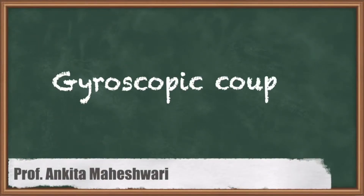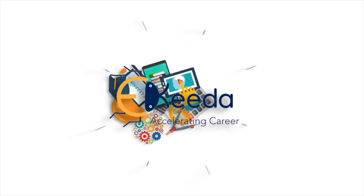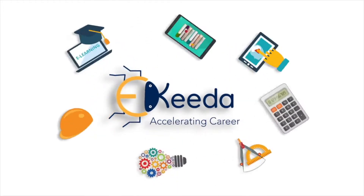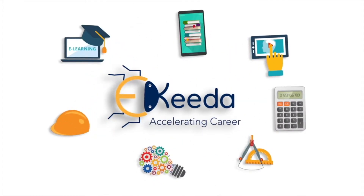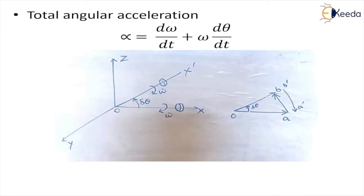Hello everyone. In this video we will discuss about gyroscopic couple. In earlier videos we have discussed about angular velocity, which is the rate of change of angular position of a rotating body, and total angular acceleration, which is the rate of change of velocity with respect to time.